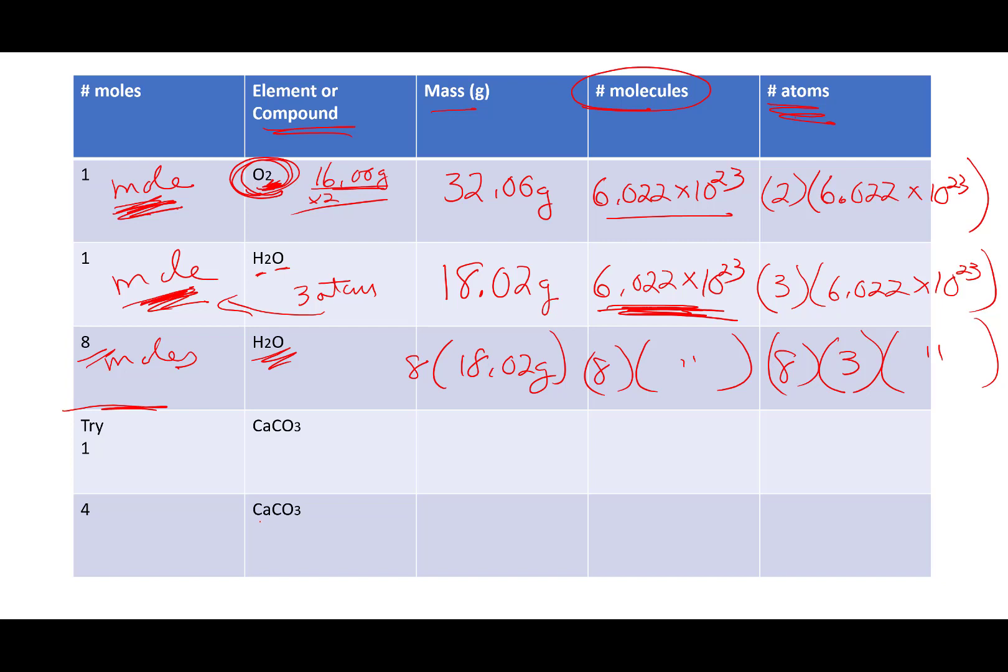One mole of calcium carbonate. We found the mass earlier today, 100.09 grams. How many molecules? 6.022 times 10 to the 23rd. How many atoms? Well, let's count. One, two, plus three, so five times Avogadro's number, 6.022 times 10 to the 23rd.